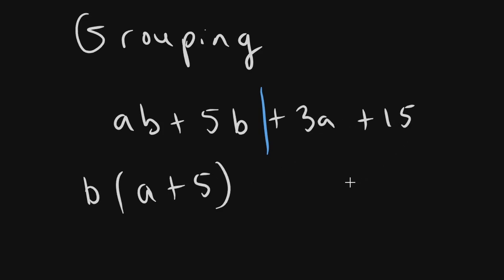Then this side, the highest common factor is 3. So you write 3 bracket a plus 5. And because there is a plus sign here, you also have a plus sign here.